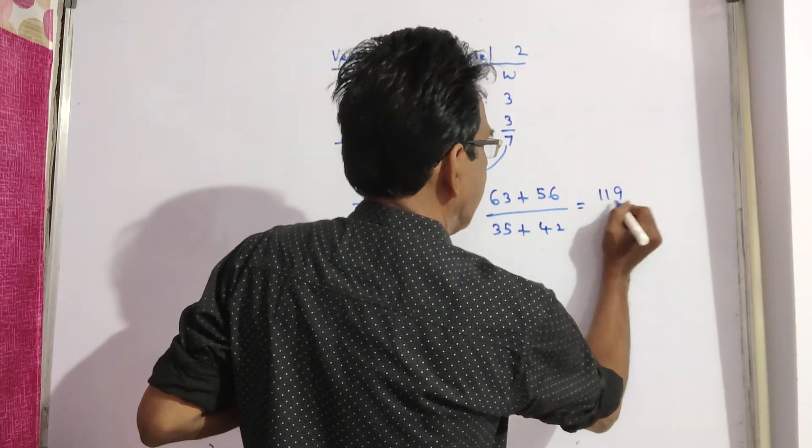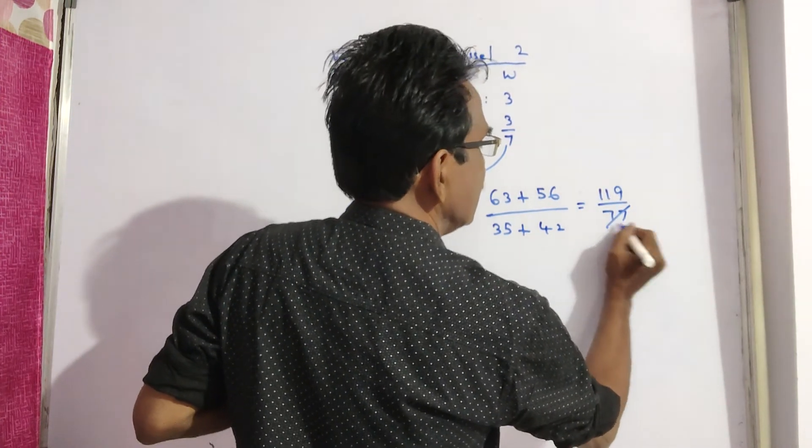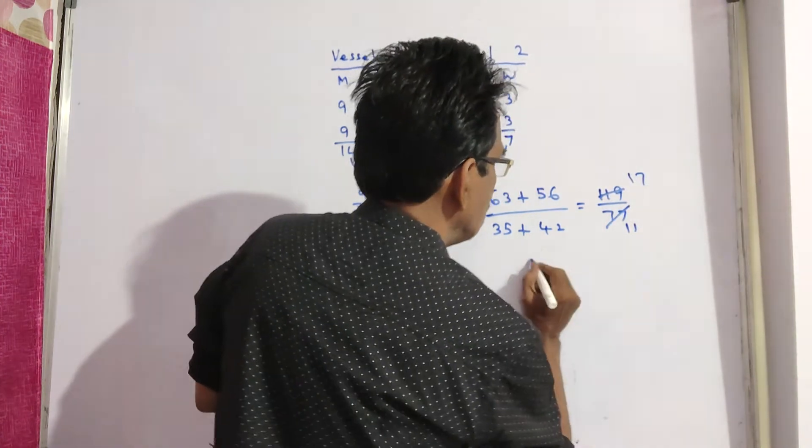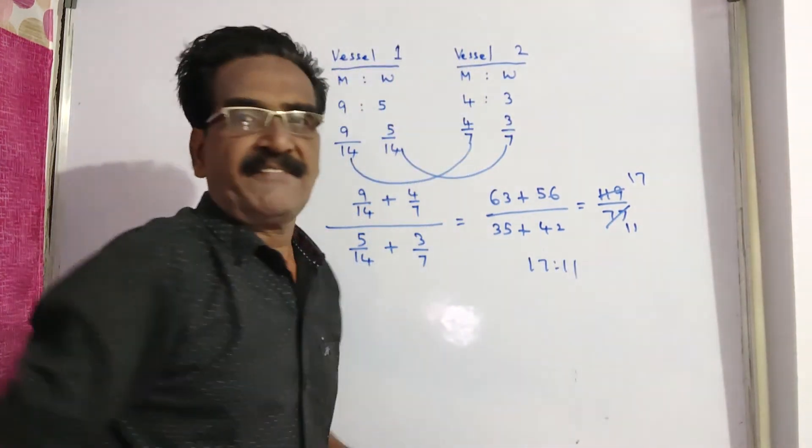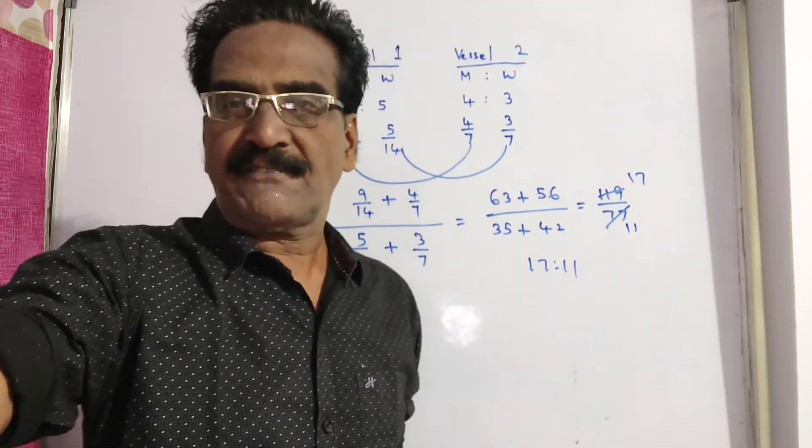So, 119 by 77, which is 7 into 17, 7 into 11. So 17 is to 11 is your answer, friends. Thank you.